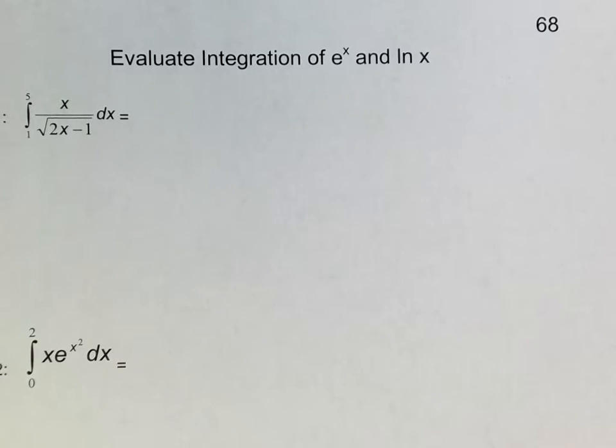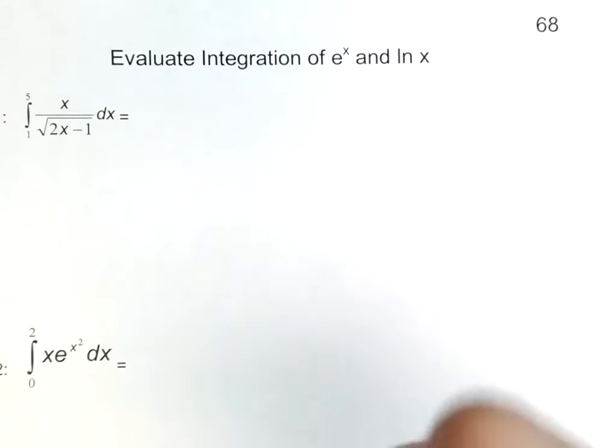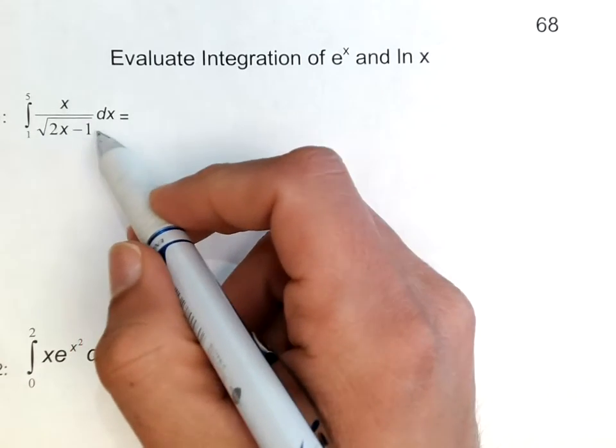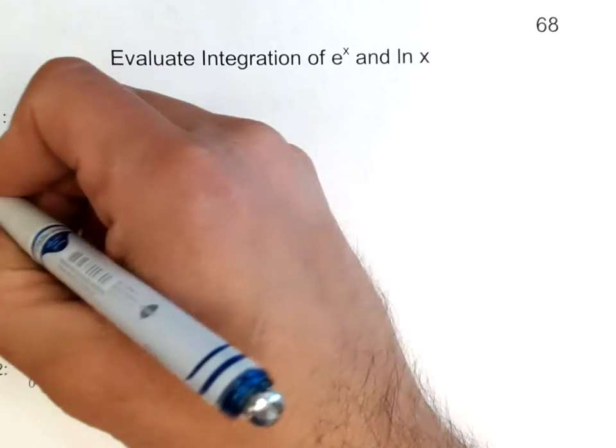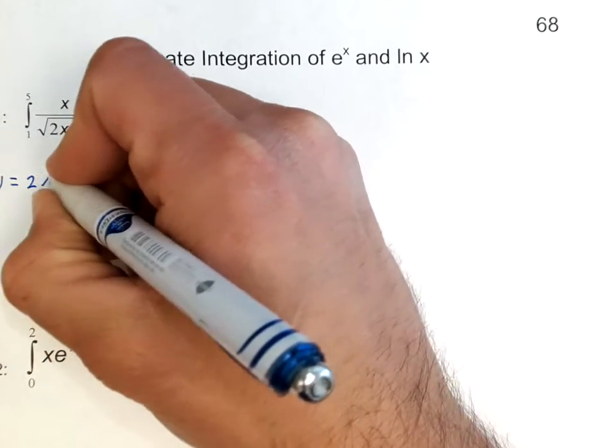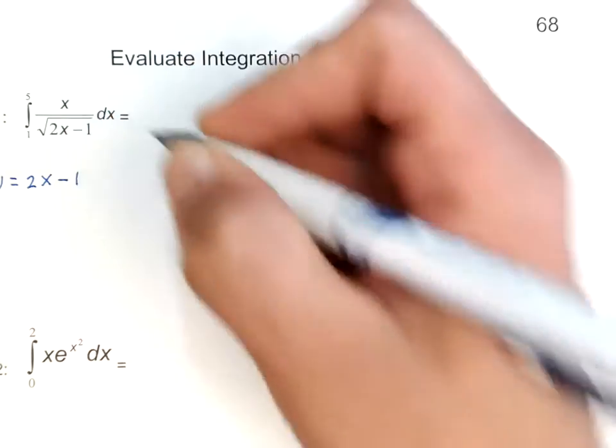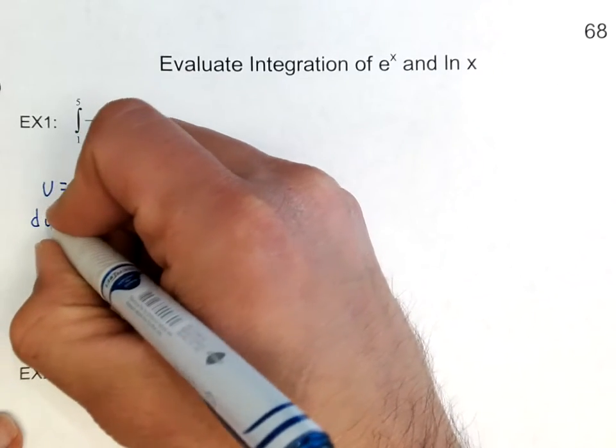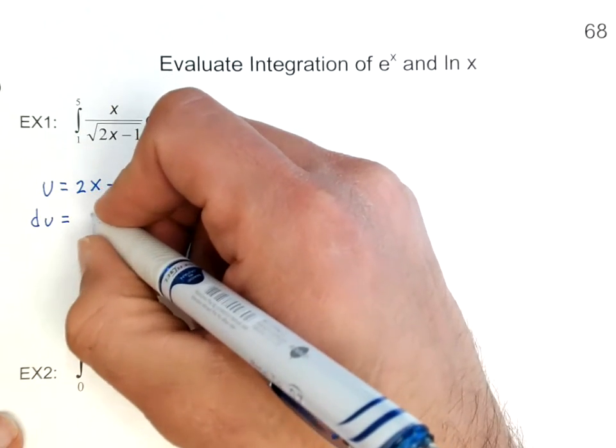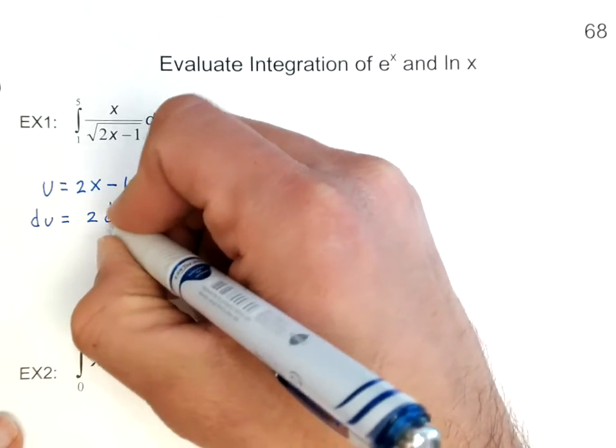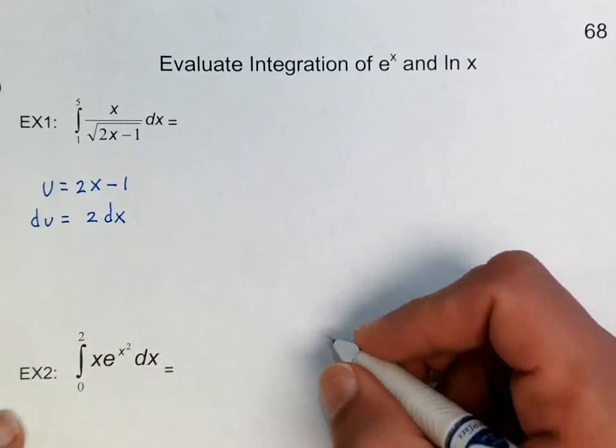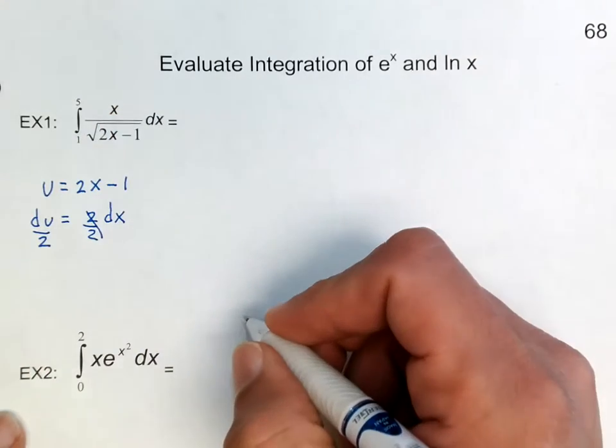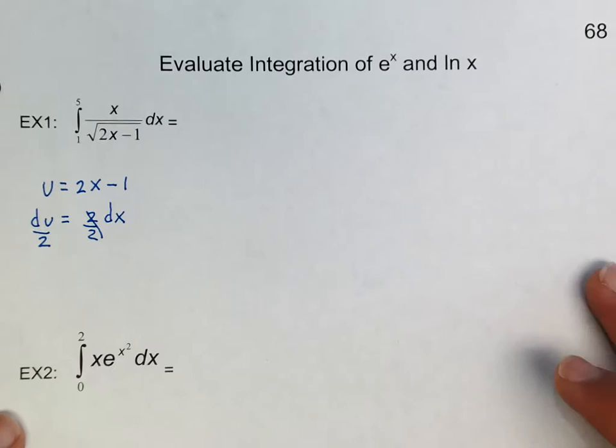So this one right here, same thing as the stuff we've done before. We want to choose the u, which in this case is going to be the denominator of this since it's being raised to the power of one half. So we have u is equal to 2x minus 1. Therefore, du would be equal to 2 dx. Now, if I divide both sides by 2, I get du over 2 is equal to dx.